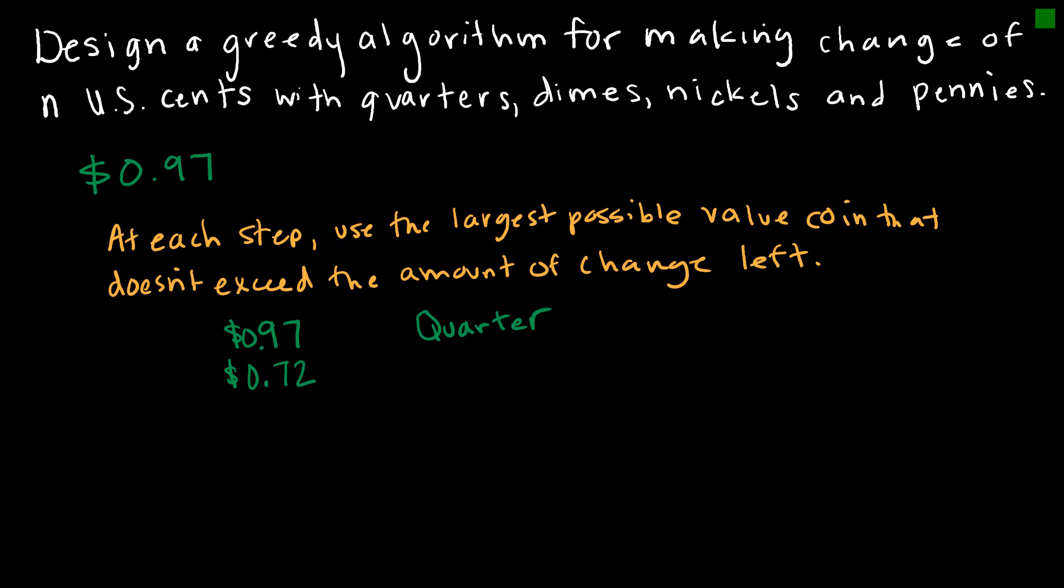How would I make change for 72 cents? And again, that was 0.97 minus 0.25. Can I still give a quarter, which is the largest possible coin? I can. So I'm going to do a quarter again, which is 72 cents minus 0.25. And that would give me 47 cents left over.